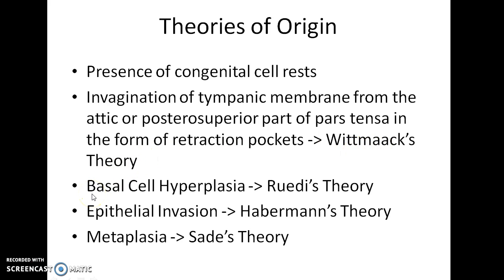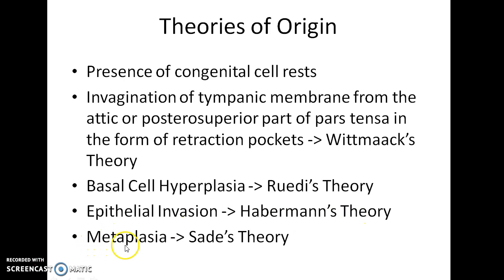Cholesteatoma can also arise due to basal cell hyperplasia — this is known as Ruedi's theory. Epithelial invasion can also lead to cholesteatoma — this is known as Habermann's theory. Cholesteatoma can also arise due to metaplasia — this is known as Sade's theory.